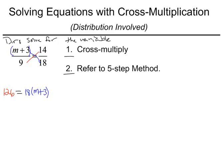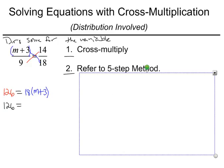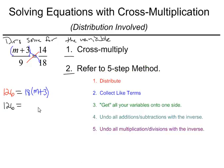So from there now, we're going to take a look at saying it's 126 equals, this is where the five-step method is going to kick in. So we see here we're going to be asked to distribute. So we've got 18m plus 54. I'm going to perform the distribution.